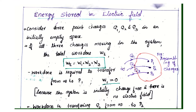Dear students, this is the derivation for energy stored in an electric field. For that, consider three point charges Q1, Q2, and Q3 in an initially empty space.